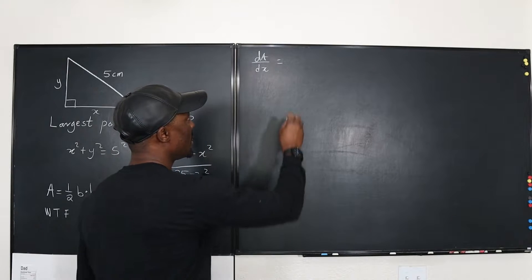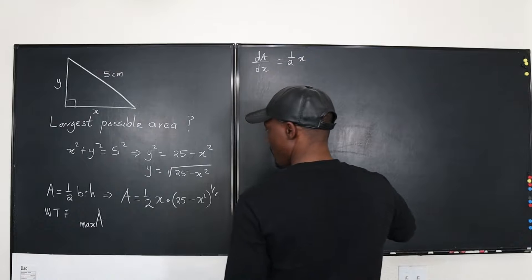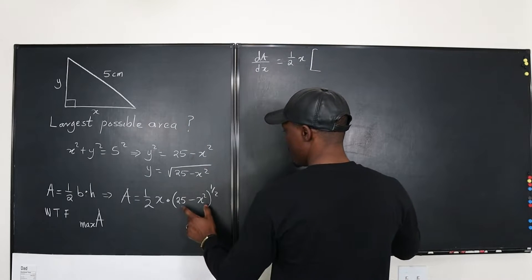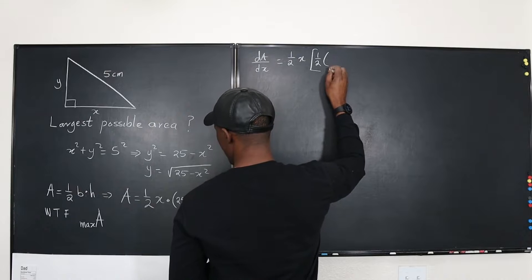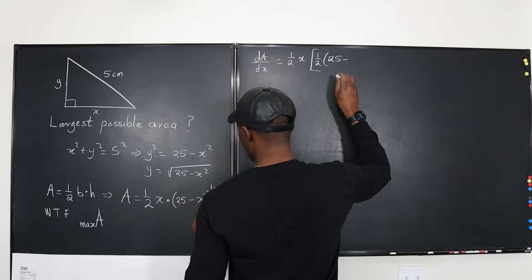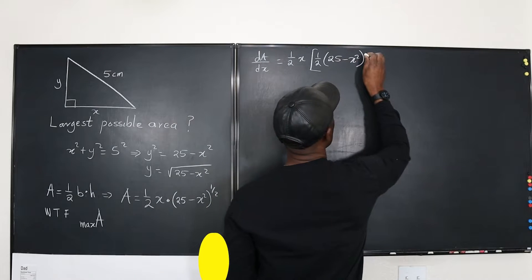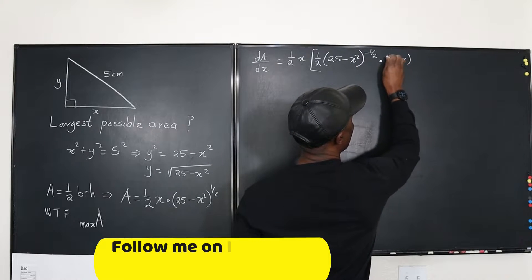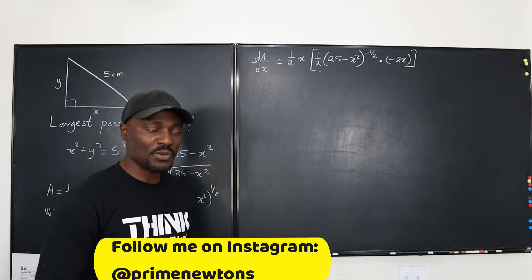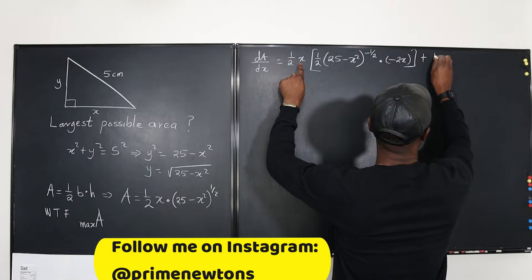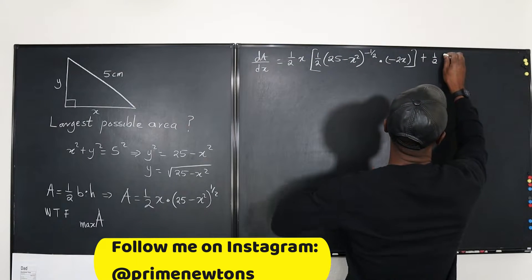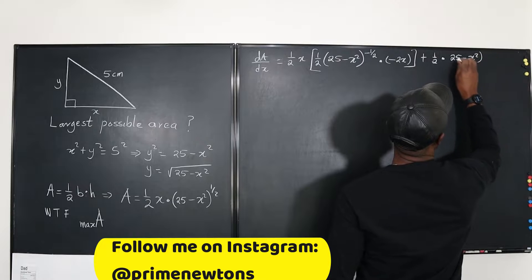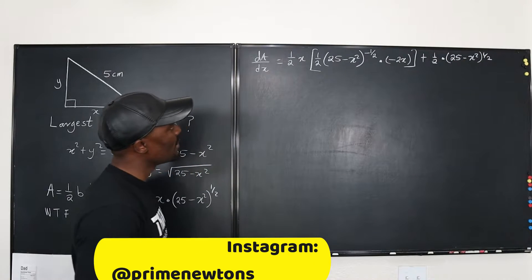Following the product rule: keep the first term (one half x), then differentiate the second. Differentiating (25 minus x squared)^(1/2) gives: bring down the one half, so we get one half times (25 minus x squared)^(negative one half) multiplied by the derivative of the inside, which is negative 2x. Then add the derivative of the first term (one half) times the second term kept as (25 minus x squared)^(1/2).